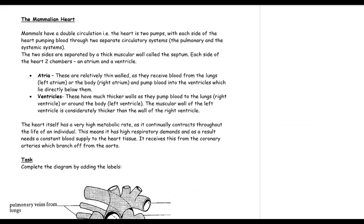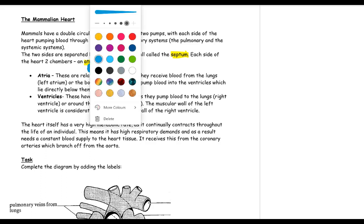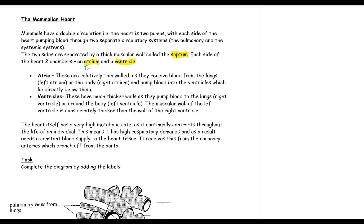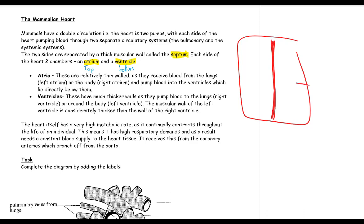Moving on, the heart has a double circulation so the heart has two pumps, with each side pumping blood through two separate circulatory systems — the pulmonary and the systemic circulation. Both sides are separated by the thick muscular wall called the septum. Each side of the heart has two chambers: an atrium and a ventricle. The atria are at the top and the ventricles are at the bottom. We also have little valves in between the atria and the ventricles.